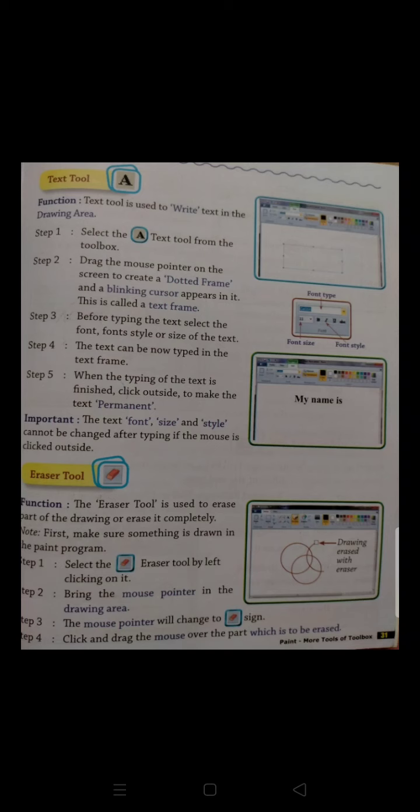When the typing of the text is finished, click outside to make the text permanent. When we have finished our text in the frame, click outside the white area. We can save our text permanently.